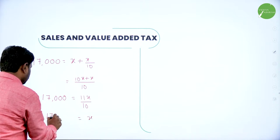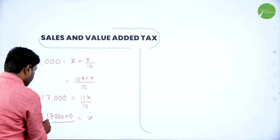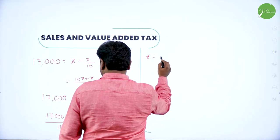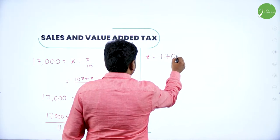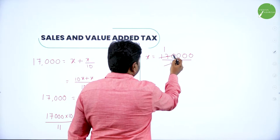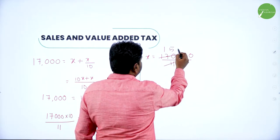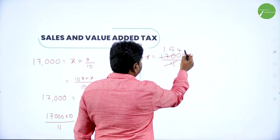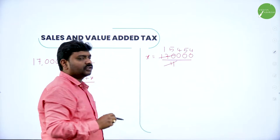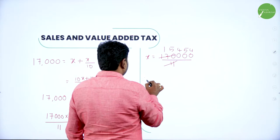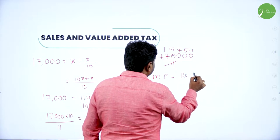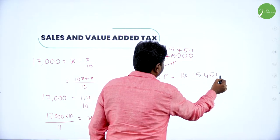Rearranging: X = 17,000 × 10 / 11. Simplifying: X = 1,70,000 / 11. Dividing: 11 into 170 gives 15, remainder 5; continuing the division we get approximately 15,454. Therefore, market price is equal to rupees 15,454.